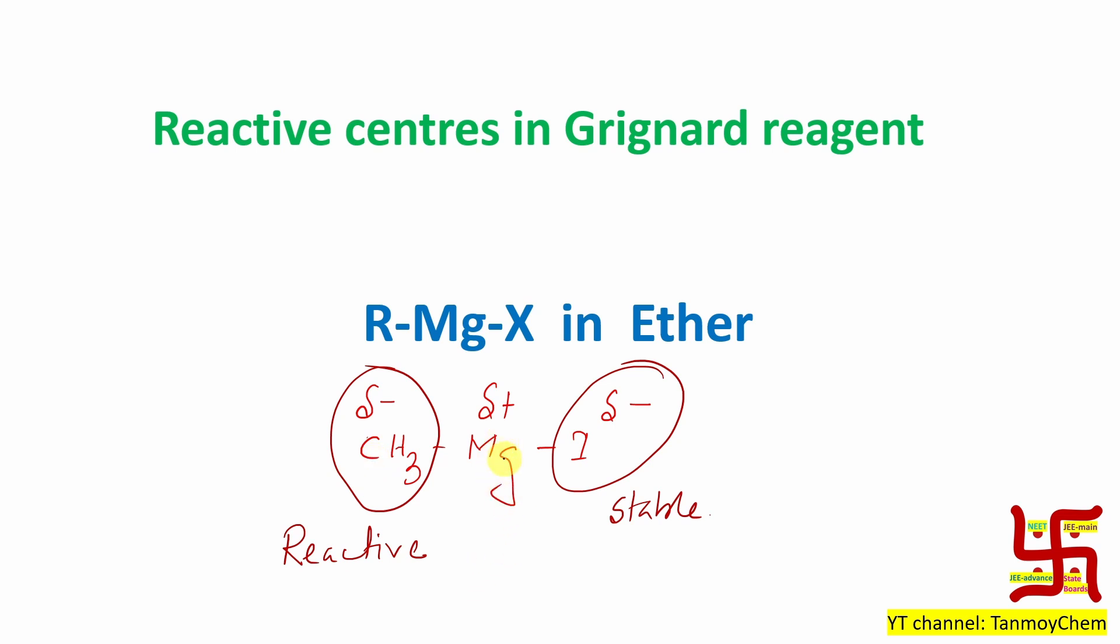Not only that. Actually, if you look at the magnesium, it is in plus 2 oxidation state. So, this magnesium in plus 2 oxidation state can act as Lewis acid, meaning electron deficient and it can accept a pair of electrons.